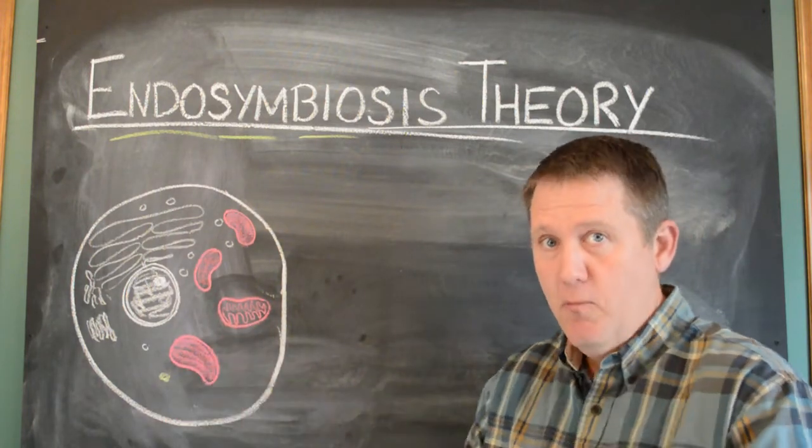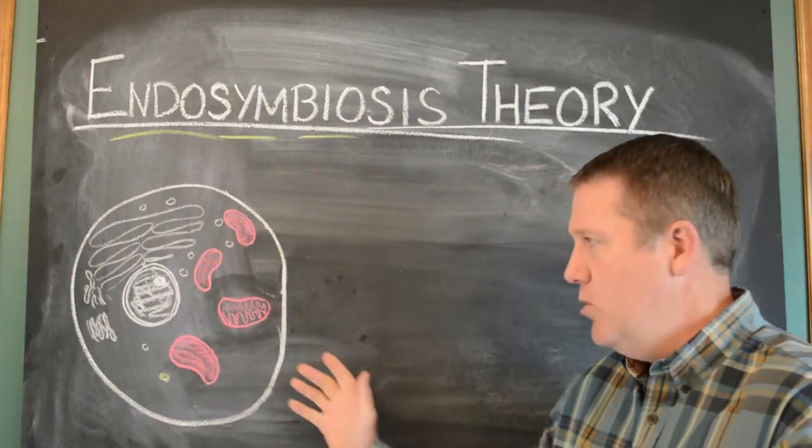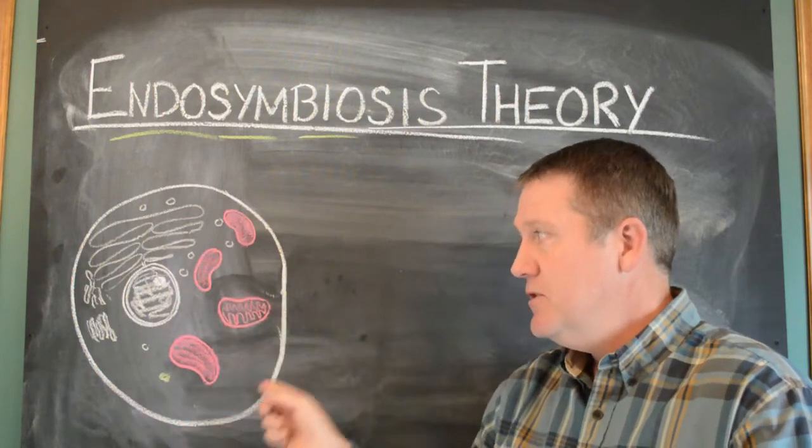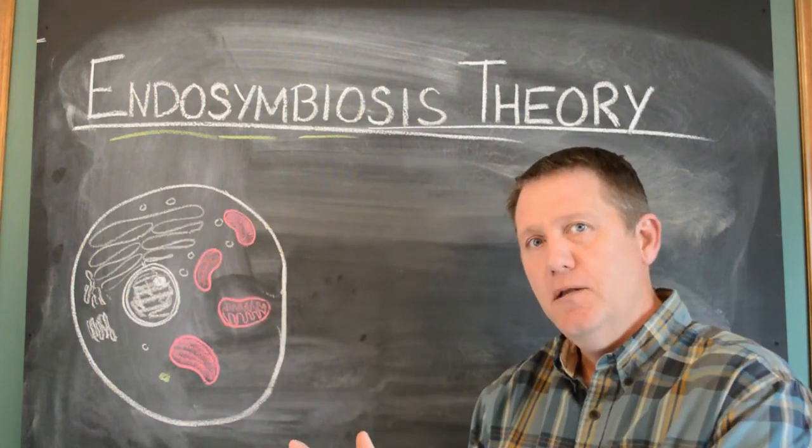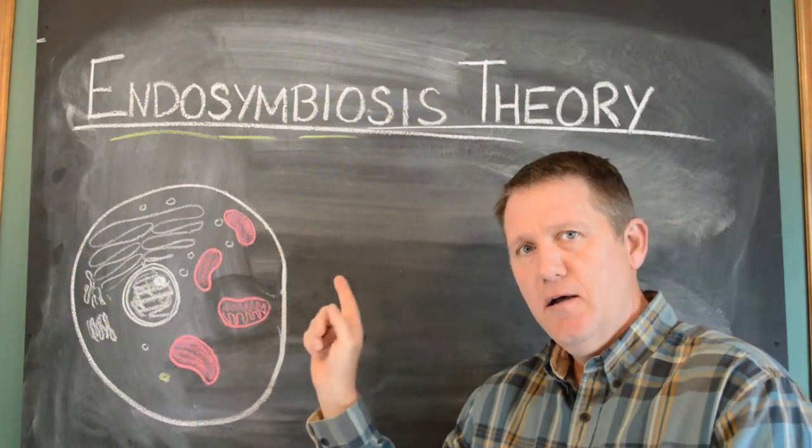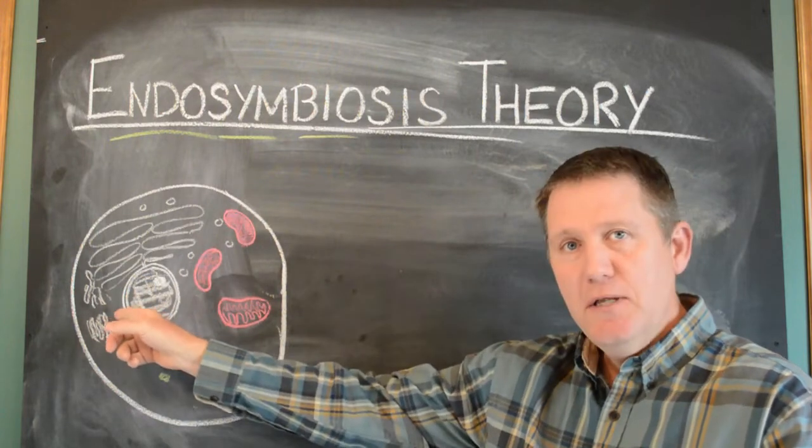But here's what I see each side gets out of it. The bacteria, which we now call mitochondria, have a safe place to live. They're not out here anymore. They have a nice stable home. And this cell's kind of end of the bargain is to say, tell you what, I will give you guys food and oxygen. I'll supply all you need. What does the cell get out of it?